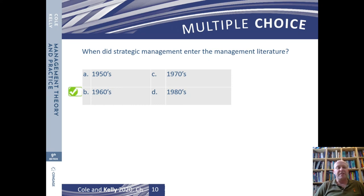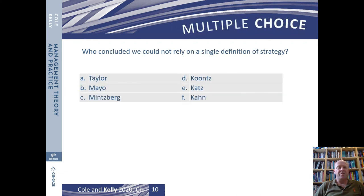Strategic management entered the literature pretty much around the 1960s. The second question: who concluded we could not rely on a single definition of strategy — was it Taylor, Mayo, Mintzberg, Kunst, Katz, or Kahn? The correct answer was Mintzberg, option C. If you got either of those two wrong, maybe go back and have another look through the chapter.